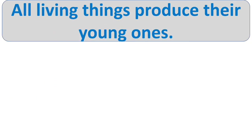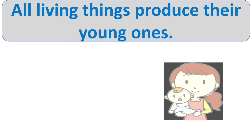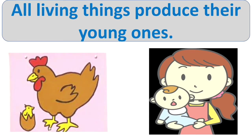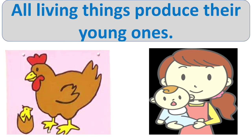All living things produce their young ones — they give birth to young ones of the same kind. Human beings reproduce by giving birth to their babies. Animals reproduce by laying eggs or giving birth to their babies. Plants also reproduce through seeds or other parts of the plant, like their stem or leaves.